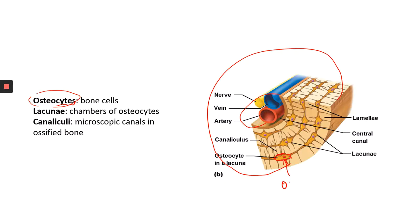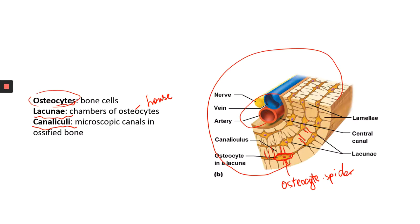Osteocytes are spider-like structures that live in chambers called lacunae. Lacuna is the singular form — a little space or chamber where an osteocyte lives, basically the little house the osteocyte lives in. The next structure is called canaliculi. Canaliculi are the wrinkle-like lines you see in the image; those lines are actually little tunnels that connect multiple osteocytes, and this is how they communicate with each other.